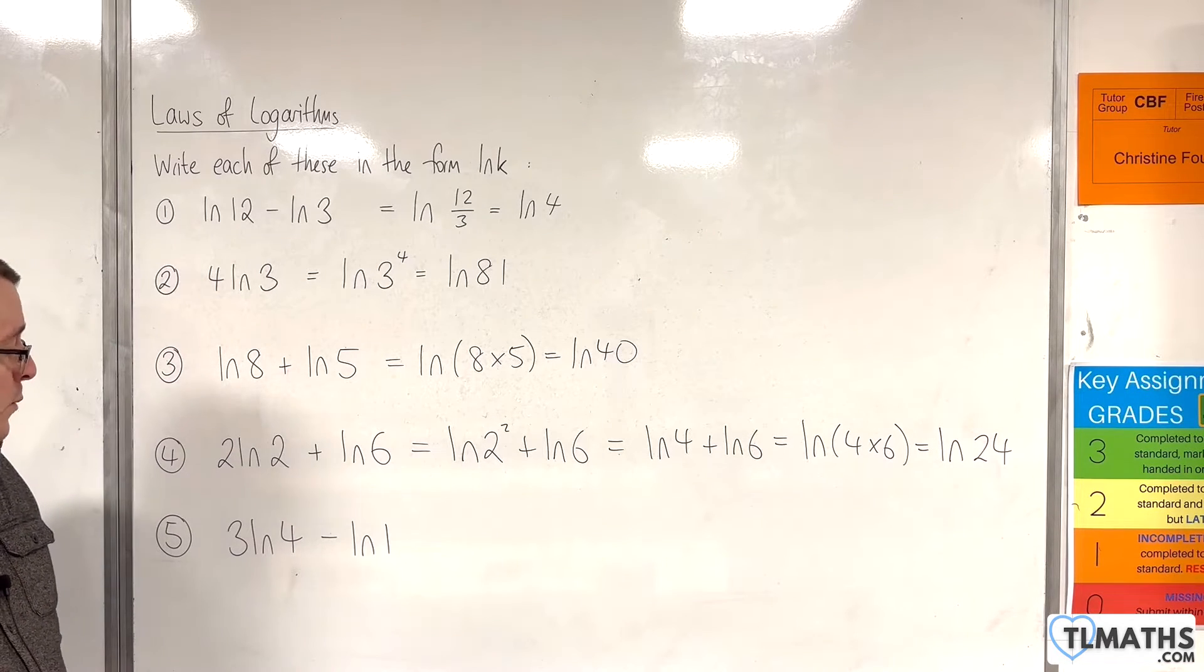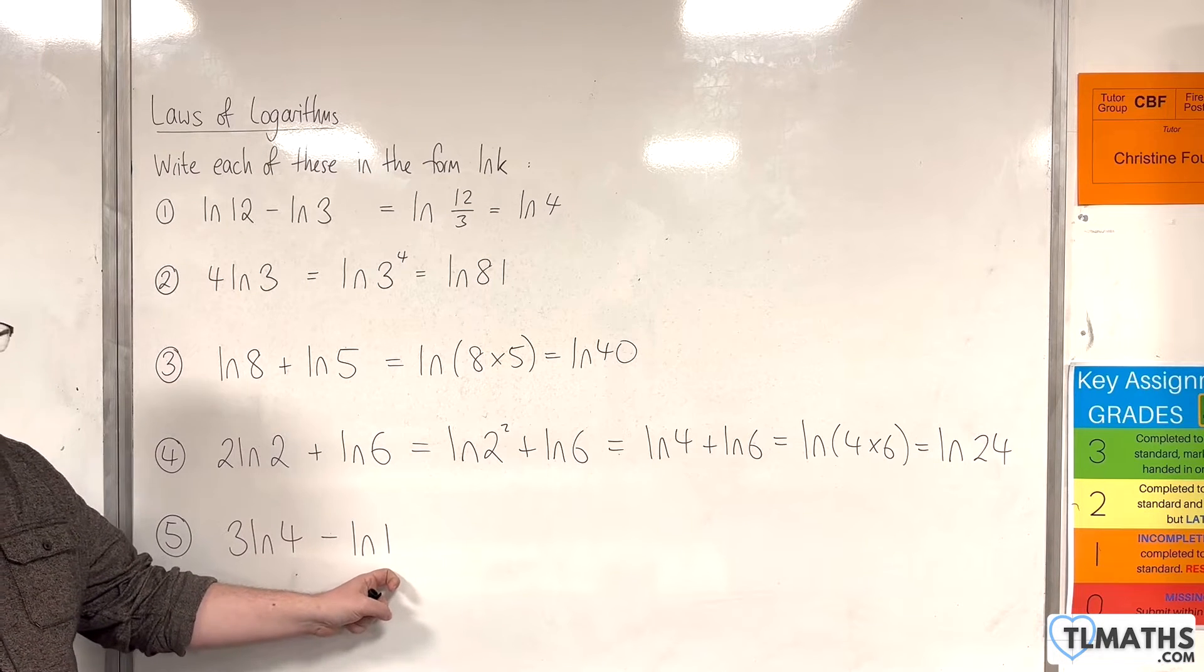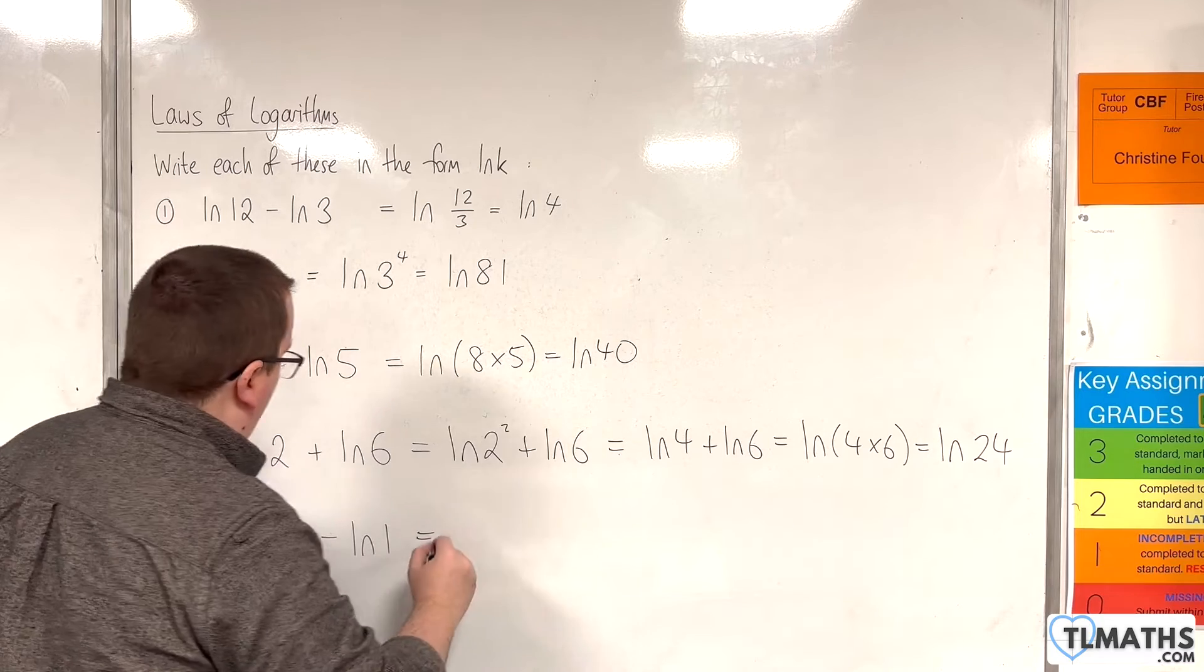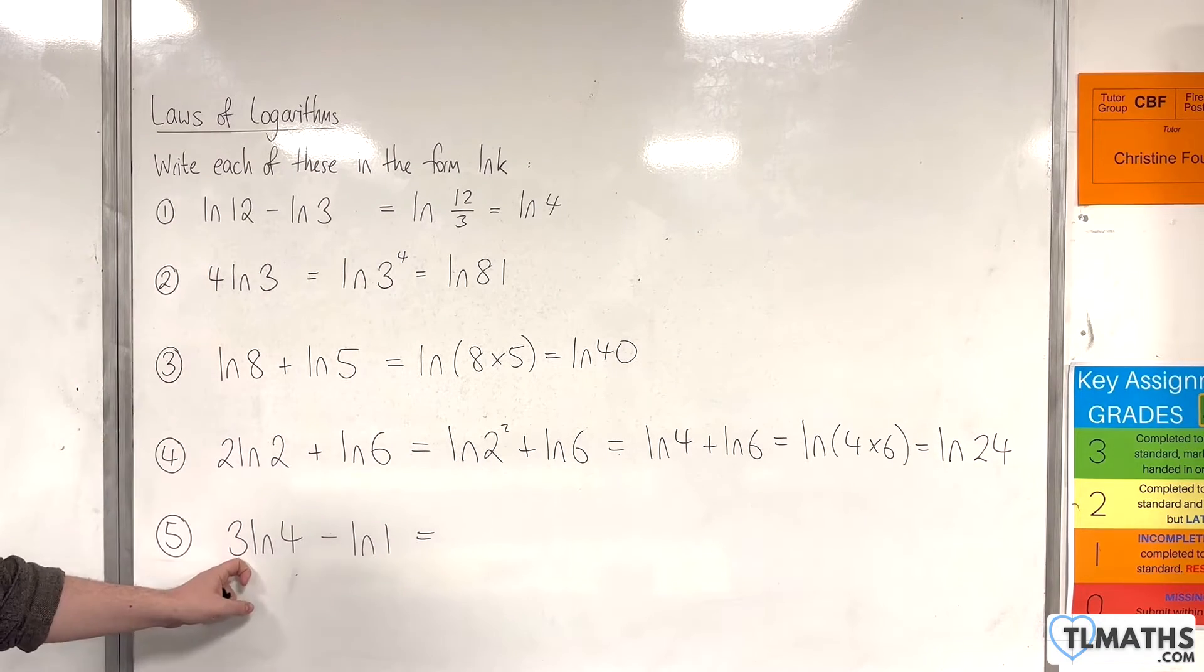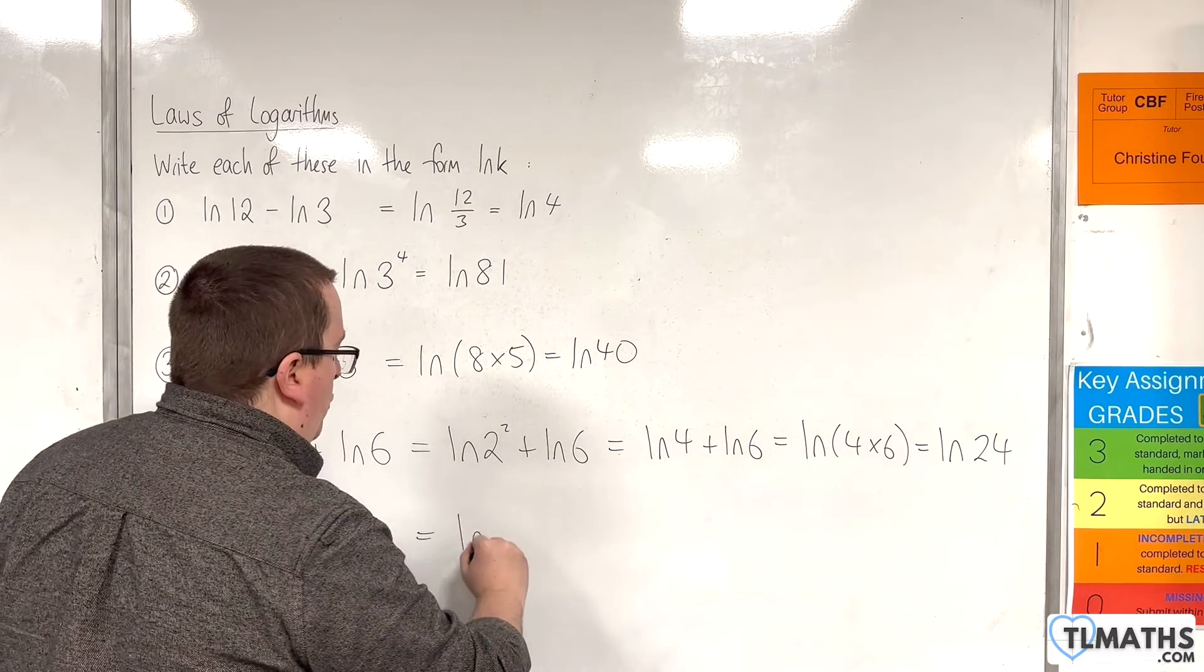Now number 5, we have 3 times the natural log of 4 take away the natural log of 1. Bring the 3 up to the power first, so we have the natural log of 4 cubed.